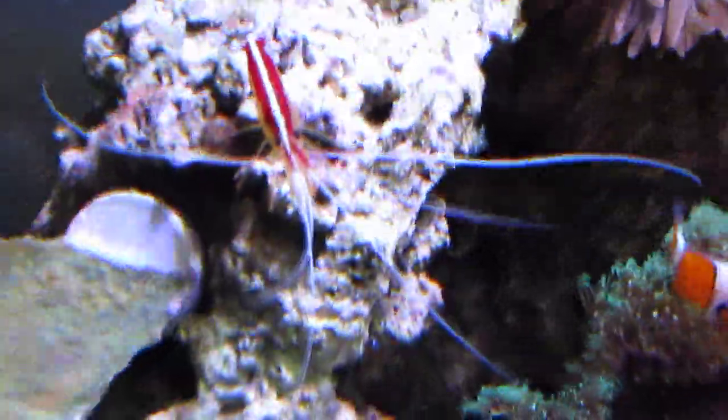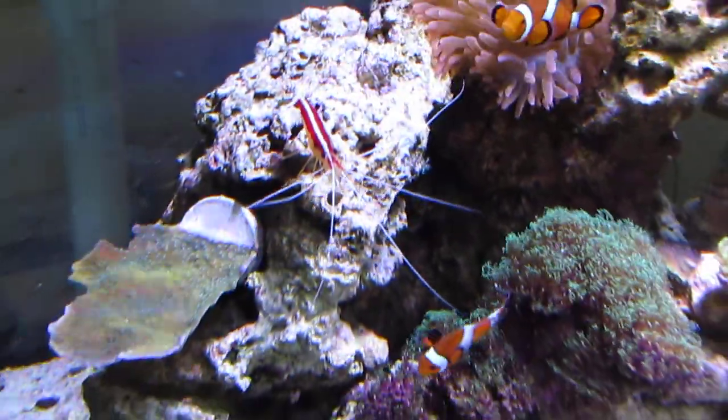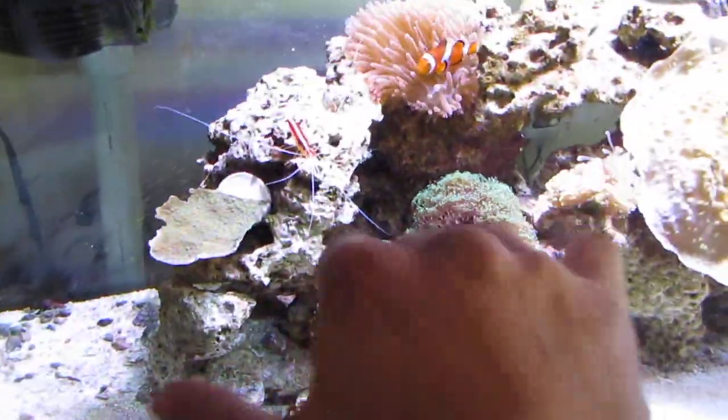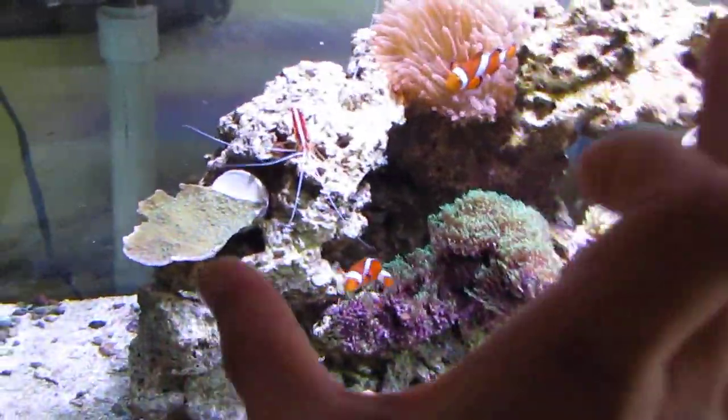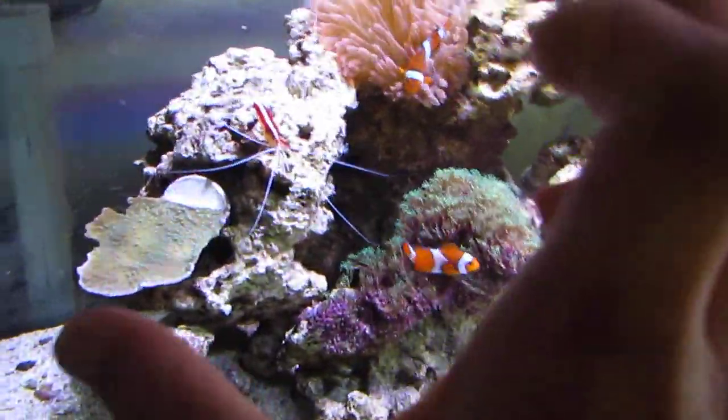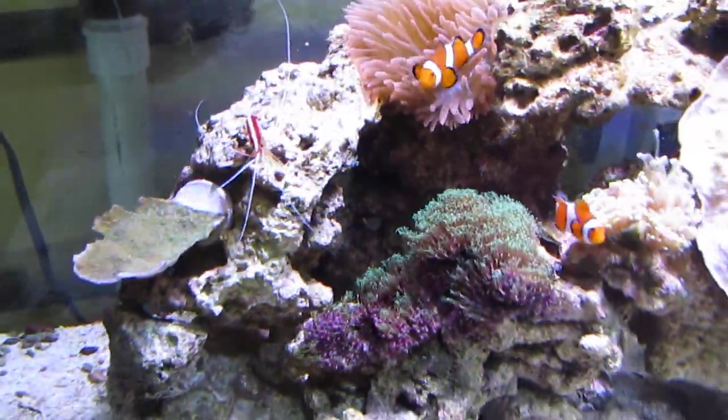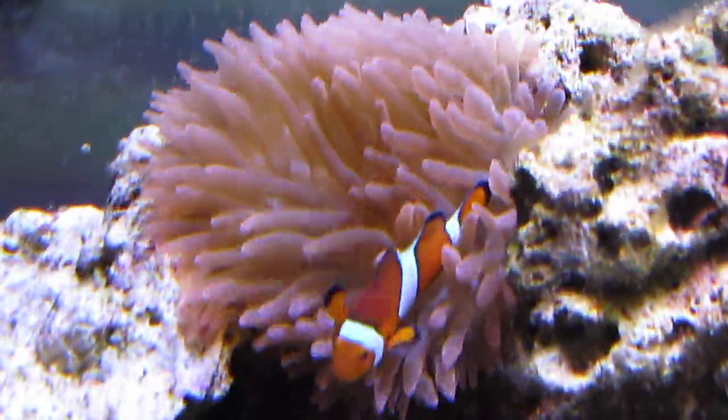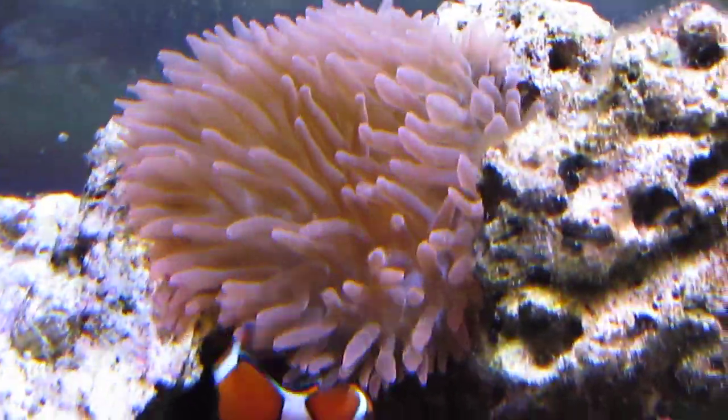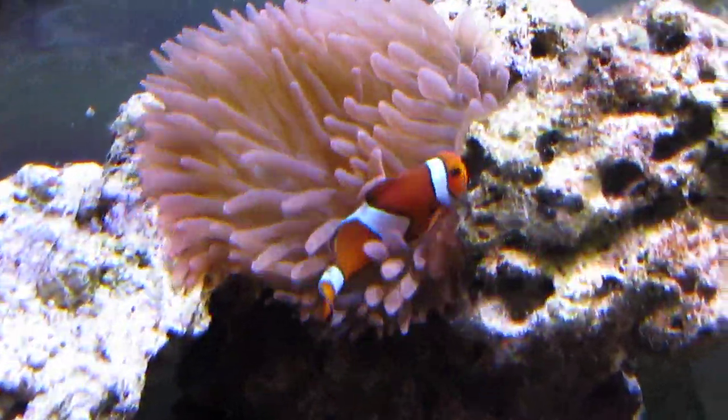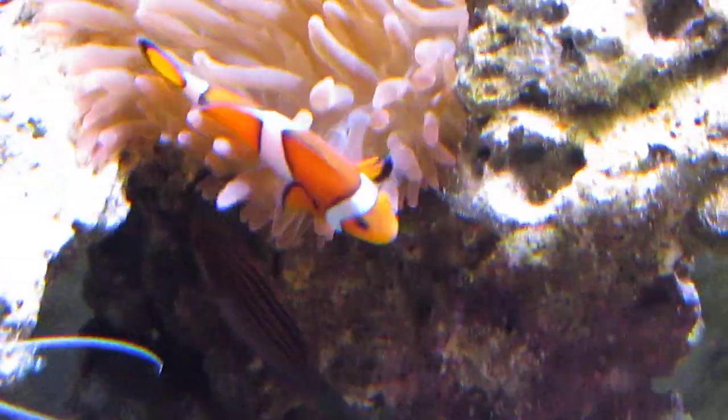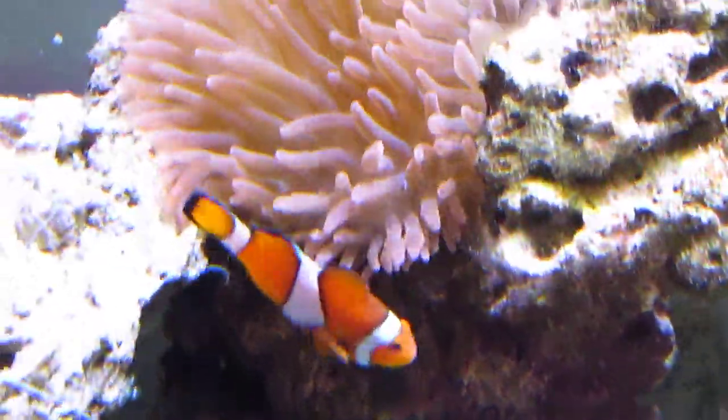Over here is my gigantic cleaner shrimp. His tentacles, his little antennas are like, I would say, a little more than half a foot. I would say seven inches wide when he extends them horizontally. Over here is my beautiful anemone and my beautiful clownfish. Yeah, very healthy and fat and beautiful looking. I mean, look at that. Look how much color he has. It's just amazing.